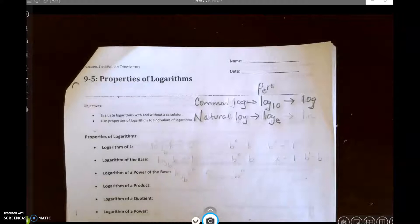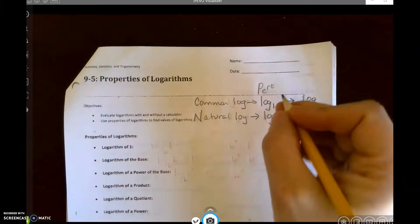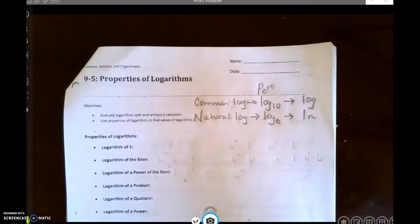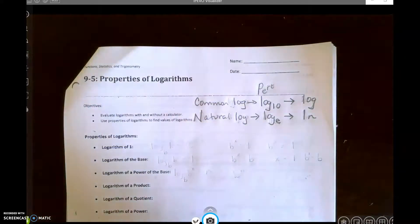e is approximately 2.71828, and the way we abbreviate log base e, we just say ln. That means natural log. All right, so let's look at our properties of logarithms.